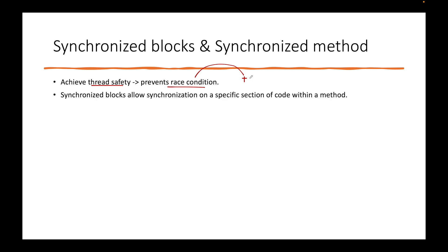There are differences between synchronized blocks and synchronized methods. When we use a block, it performs synchronization on a specific section. Synchronization basically means that if I apply the synchronization mechanism on a certain section of code, I want to ensure that multiple threads do not access the critical resource or critical section. I make that portion or method synchronized so that multiple threads do not manipulate the shared resource or variable.